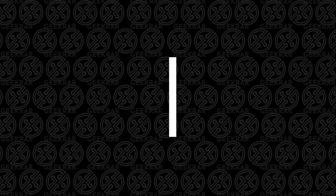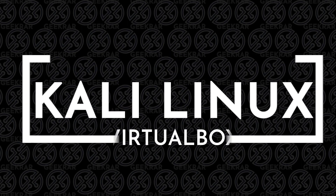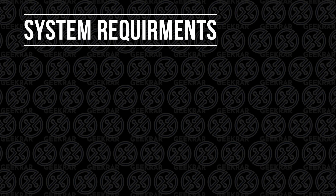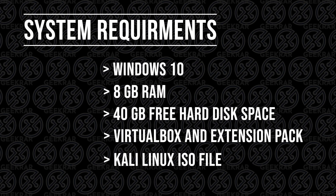Welcome back to the channel. In today's video I'm going to show you how to install Kali Linux in VirtualBox on a Windows 10 PC. Before we get started, let's quickly look over the system requirements. You're going to need Windows 10, roughly 8 gigs of RAM — you can do it with less but I recommend 8 — and for hard disk space you'll want approximately 40 gigs, though 20 gigs is fine as a minimum. You'll also need to install VirtualBox and the extension pack.